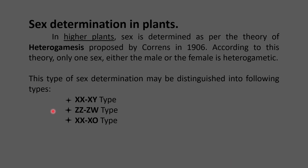Sex determination in higher plants is explained by the theory of heterogamety. As the name suggests, heterogamety refers to the formation of different gametes. Whenever two different types of gametes are produced, that determines the sex of an individual. The one which produces the same gametes has no part in determining the sex of the progeny, while the one with different gametes determines sex in the progeny. This theory was proposed by Correns in 1906. According to it, only one sex is heterogametic and the other is homogametic. This type of sex determination has three types: XX/XY type, ZZ/ZW type, and XX/XO type.